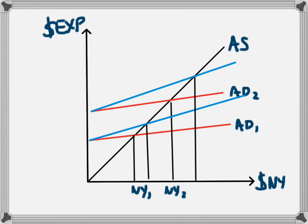The original increase in national income was from NY1 to NY2. The new level of aggregate demand, due to the increased level of MPC, has led to an increase in national income that is greater than from NY1 to NY2. So by having a steeper aggregate demand curve caused by a larger marginal propensity to consume, we get a greater multiplier effect, and from the same increase in aggregate demand we get a larger increase in national income.